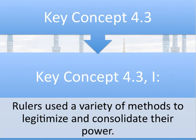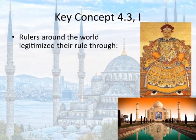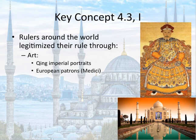Key concept 4.3, Roman numeral 1 says rulers used a variety of methods to legitimize and consolidate their power. One thing that is often overlooked as a way of legitimizing rule is through art. You can see Emperor Kangxi, pictured to the right — he was a Qing emperor who used imperial portraits to legitimize his rule. If you can make yourself look awesome through painting and art, that is how awesome you are portrayed to your people. This was also done in Europe: the Medici were a prominent family in Florence who paid for Michelangelo to paint so many awesome things, and of course had him paint pictures of them often. So you can see rulers using art to legitimize their power.